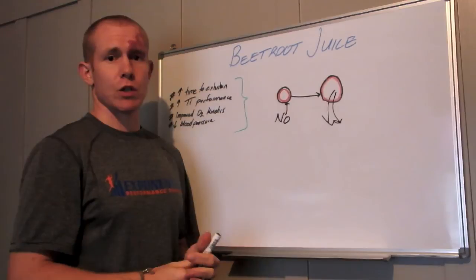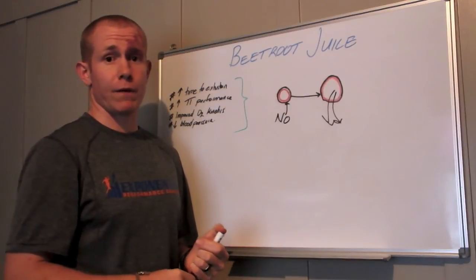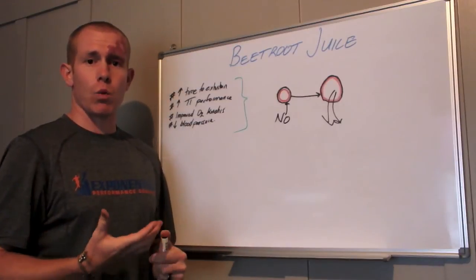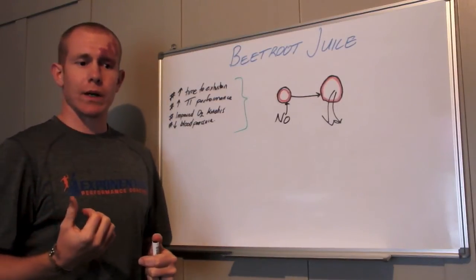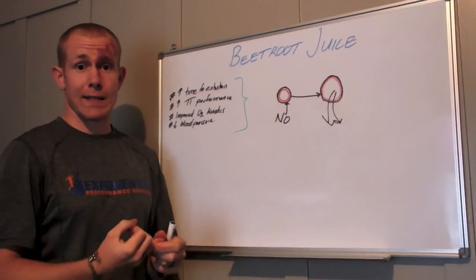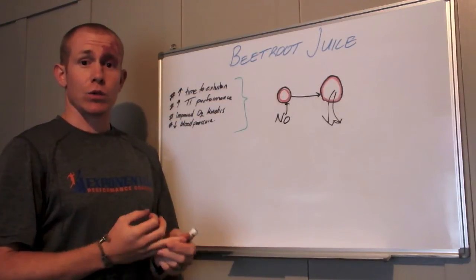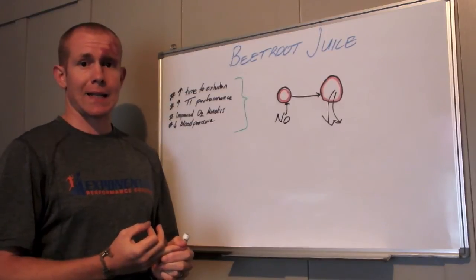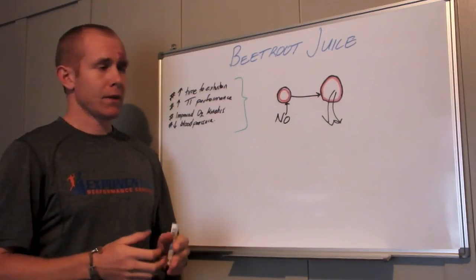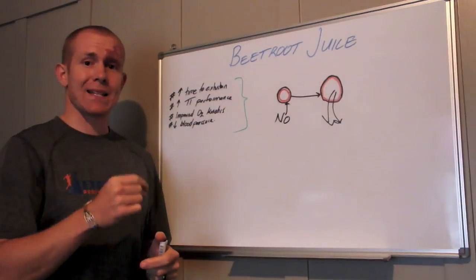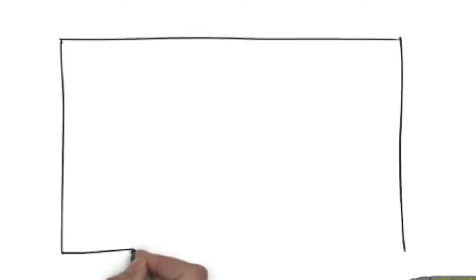So there you have it, beetroot juice and the mechanism for how it works. Next week we're going to take a look at potentially the best way to take beetroot juice for your performance, and also other foods that may contain nitrate that you could use instead of beetroot juice. There we have it team, get out there, train harder and smarter.